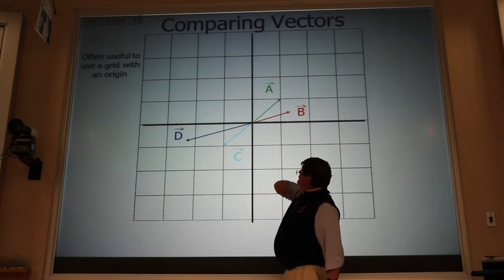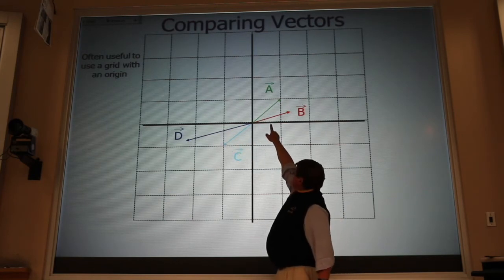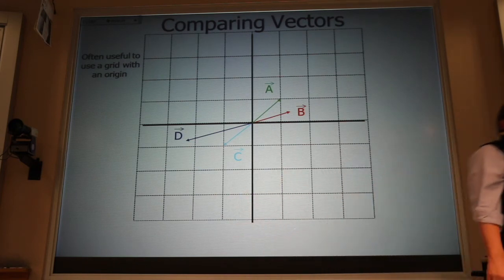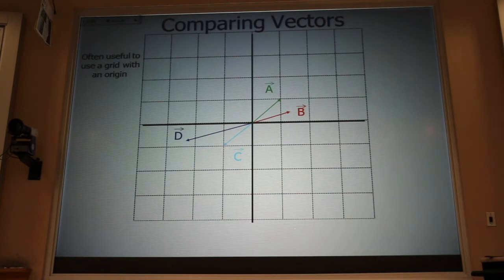It's a little harder to see that D is minus 2 times B, but I think you can see that it looks that way. Okay. So we get the same relationships that we got before.